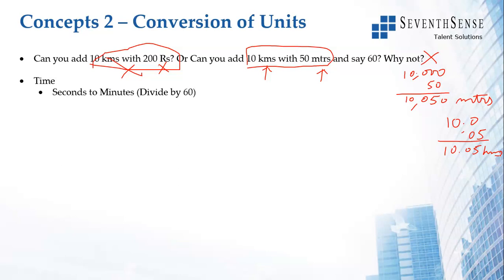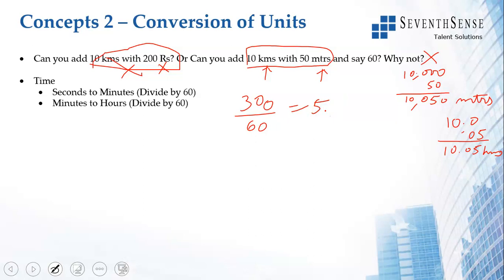How do you convert seconds to minutes? Divide by 60. So 60 seconds ÷ 60 = 1 minute. And 30 seconds ÷ 60 = 0.5 minutes. How do you convert minutes to hours? Divide by 60. So 60 minutes = 1 hour, and 360 minutes ÷ 60 = 6 hours. In summary: seconds to minutes — divide by 60; minutes to hours — divide by 60. And the other way: hours to minutes — multiply by 60; minutes to seconds — multiply by 60.